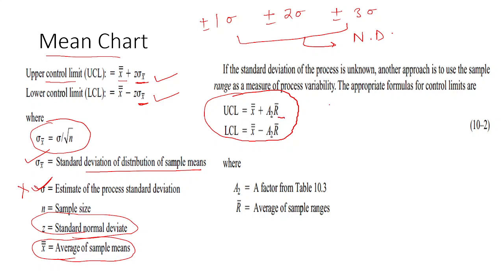If sigma is not given in the question, then the upper control limit is x-double-bar plus A2 times r-bar, and the lower control limit is x-double-bar minus A2 times r-bar. R-bar is the average range — we calculate the range of every sample and then take the mean. A2 is a factor variable whose value is taken from a standard table, which I will show in the coming slides. Let's try one example using the formula where standard deviation is also given.